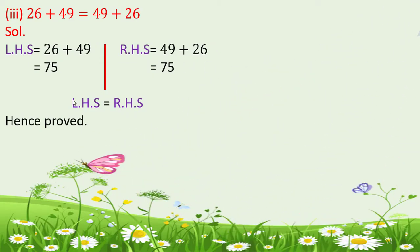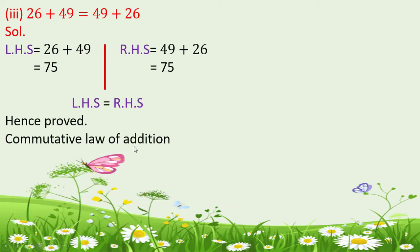The third part is 26 plus 49 equals 49 plus 26. Left hand side: 26 plus 49 equals 75. Right hand side: 49 plus 26 equals 75. Left hand side is equal to right hand side. Hence proved. The result remains same by changing the order. This is the commutative law of addition.